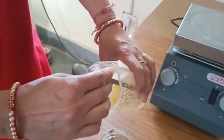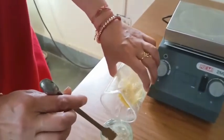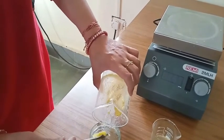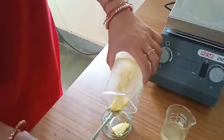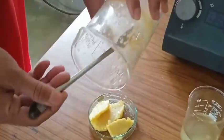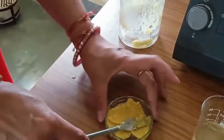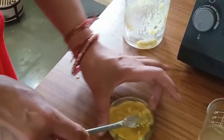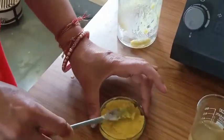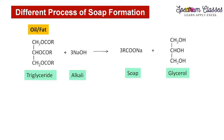Now we are removing the solution from this and transferring it into a petri dish or any mold. This is the cold process, because we have done this at room temperature, so it retains glycerol inside. This is how we can prepare soap.